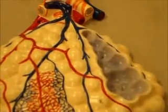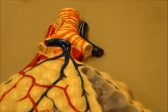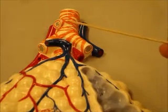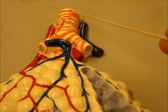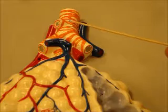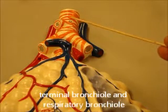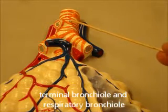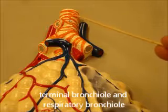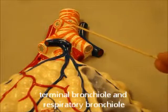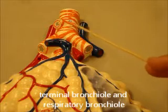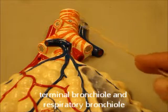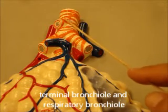Now let's look over here at the microscopic part. This right here is showing you your bronchiole. Remember the bronchus — you have primary, secondary, tertiary bronchus ending in a terminal bronchus, which then becomes a bronchiole. This bronchiole does not have cartilage. It does have smooth muscle, but this is a bronchiole — this is not the trachea. This is microscopic.